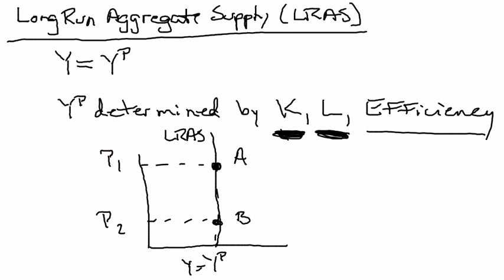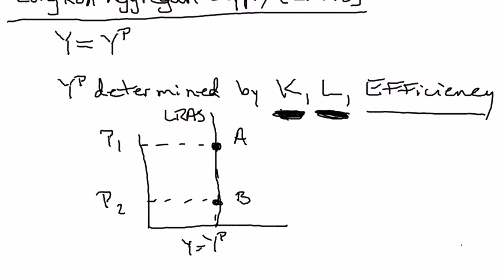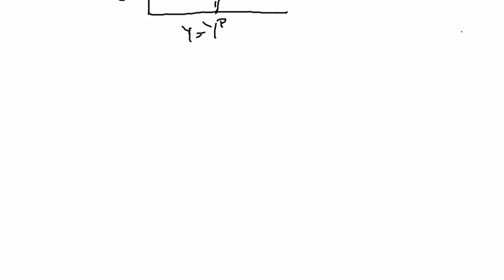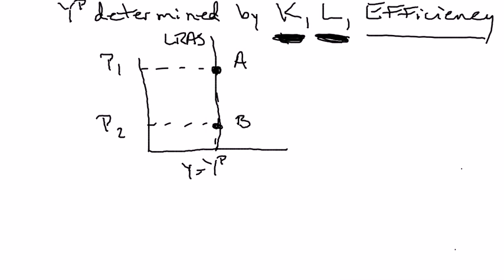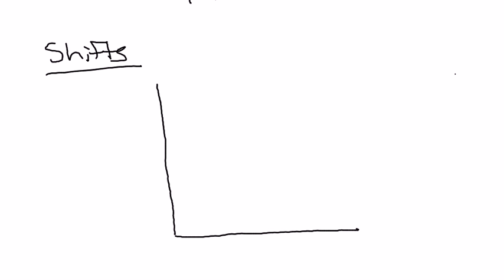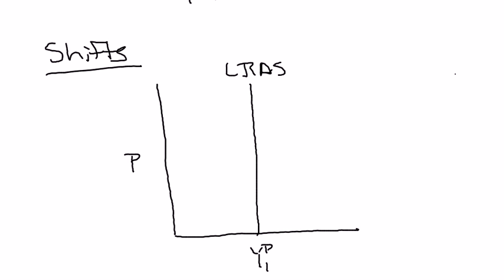For completeness, I want to talk briefly about things that are going to shift the long-run aggregate supply curve. What determines it? Well, it's these three things: the capital stock, the overall level of efficiency, and the labor force. Let's pick a price level, call it P, and some initial long-run aggregate supply curve. Here's my initial potential output — the economy is initially at point A on long-run aggregate supply curve 1.